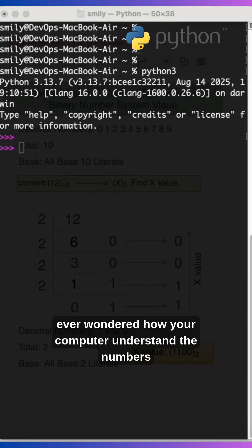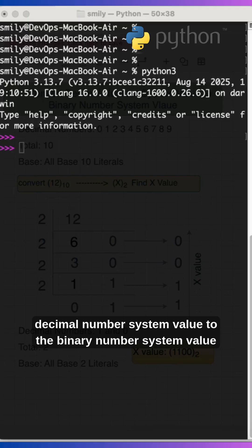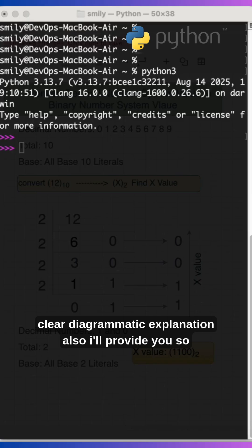Ever wondered how your computer understands numbers? In this tutorial I will explain clearly how you can convert the decimal number system value to the binary number system value with the help of the bin function. With clear diagrammatic explanation, I'll show you why this matters. Binary is the language of computers - every operation you do in a system is based on zeros and ones.